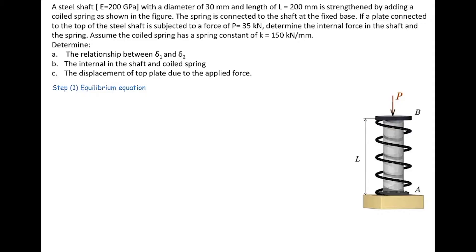This is another example on how to analyze an indeterminate axially loaded element. In this problem, a steel shaft with a diameter of 30 millimeter and a length of 300 millimeter is strengthened by adding a coiled spring as shown in this figure. This spring is connected to the shaft on the bottom and on the top part.